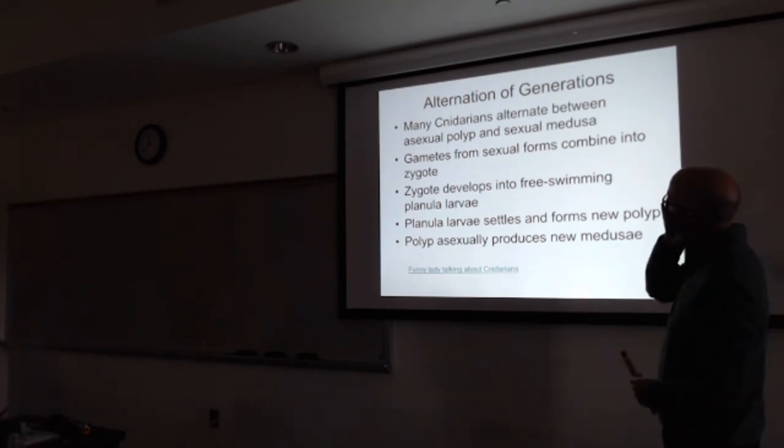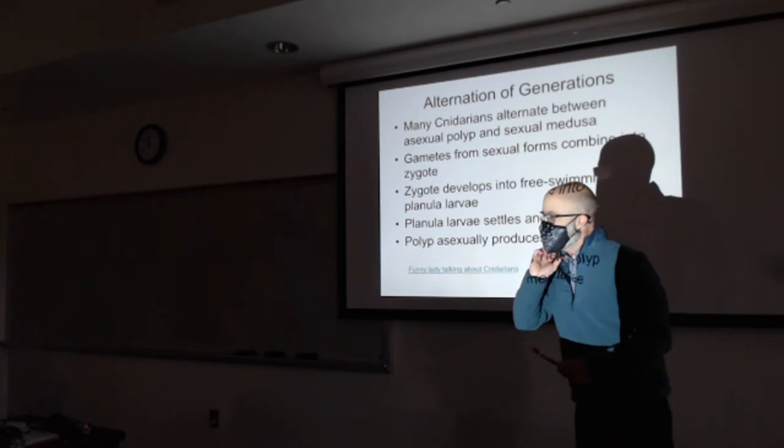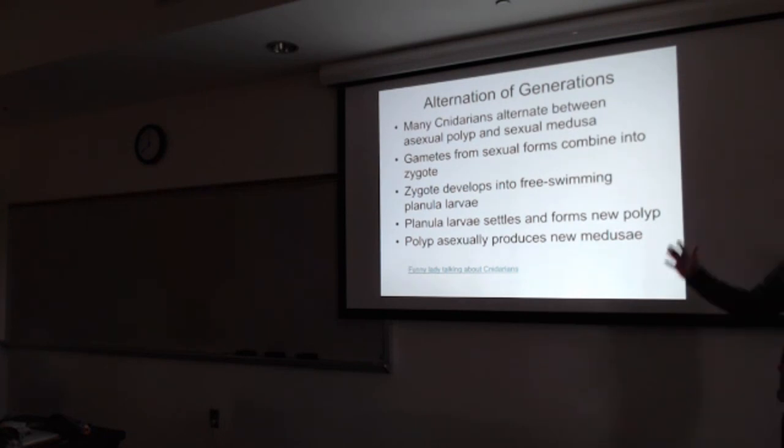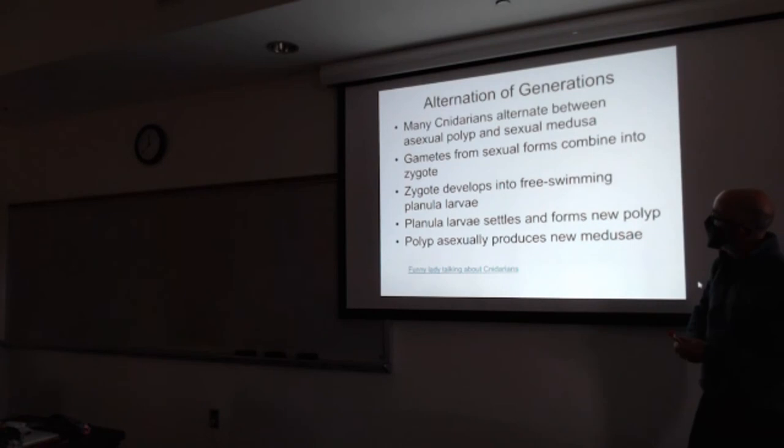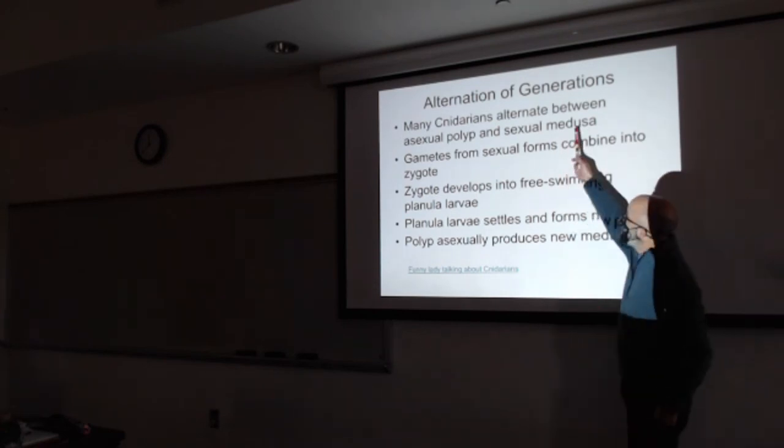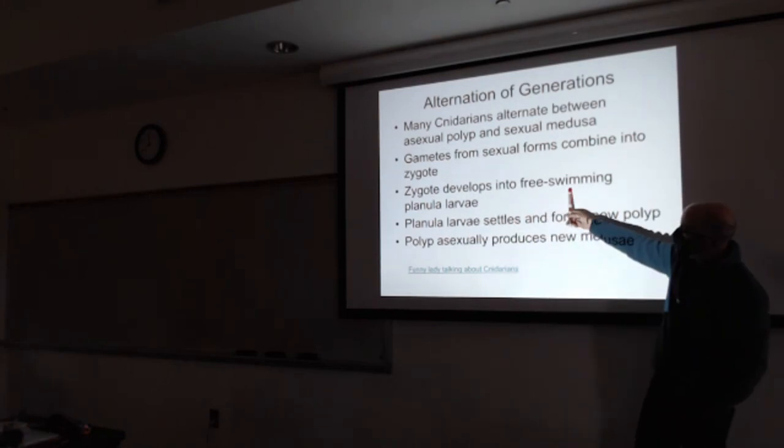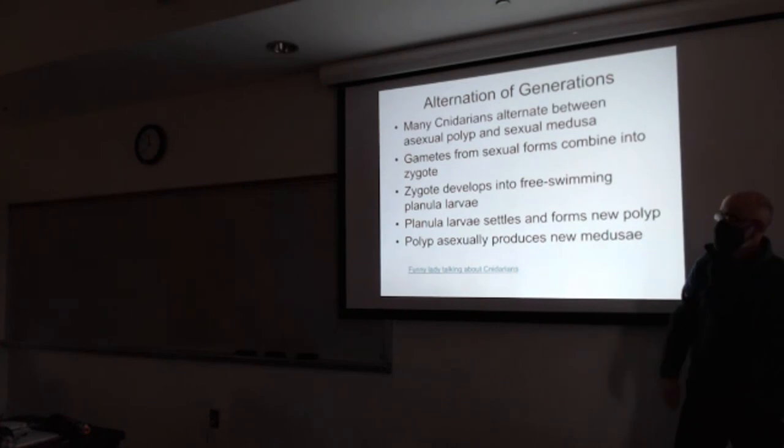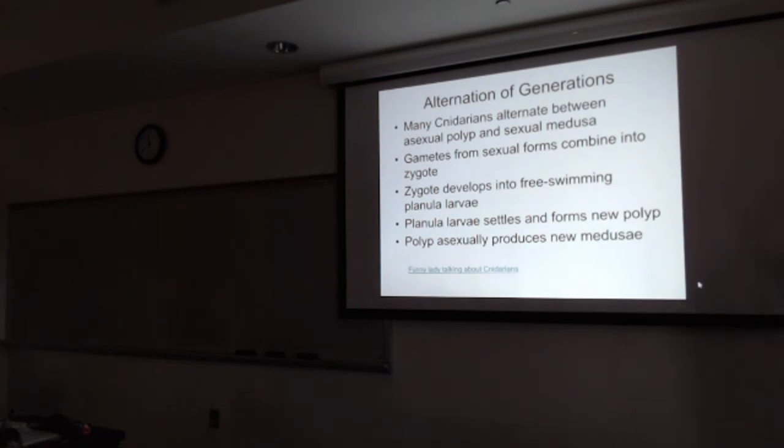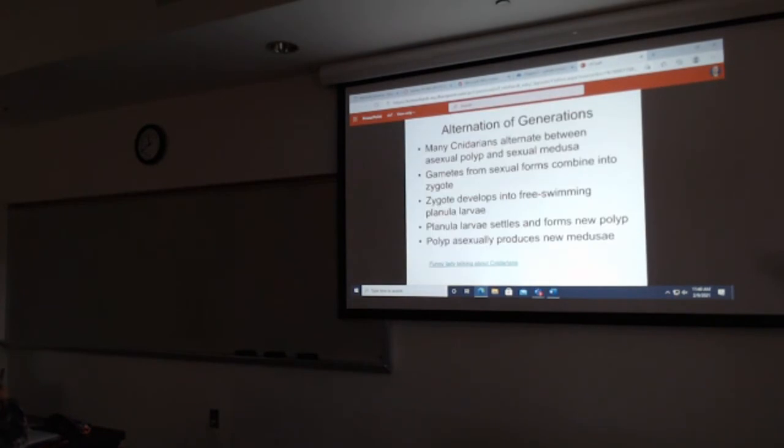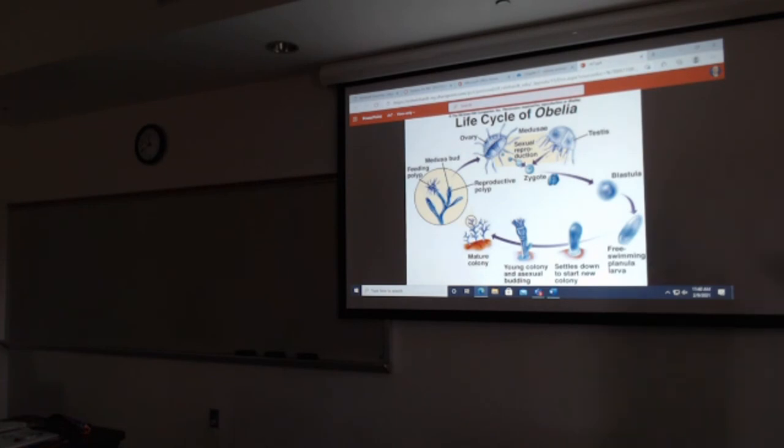Life cycle of the cnidarians. There are some that are polyp their whole life. There are some that are medusa their whole life. And then there are these that alternate between medusa and a polyp. The sexual medusa finds the medusa they love very much. The gametes combine. The zygote develops into this little larva. The larva decides it's time to settle down, finds a little spot, makes a new polyp. Let me see if this video works.